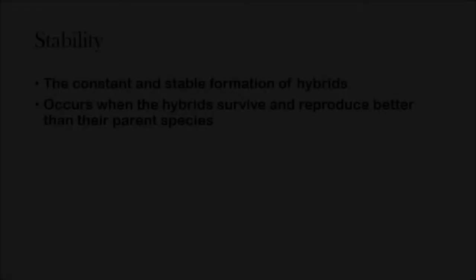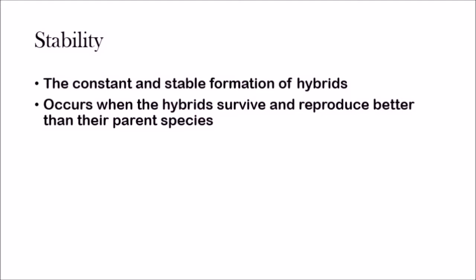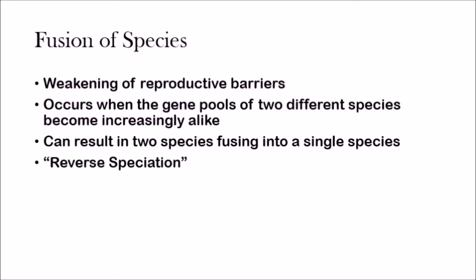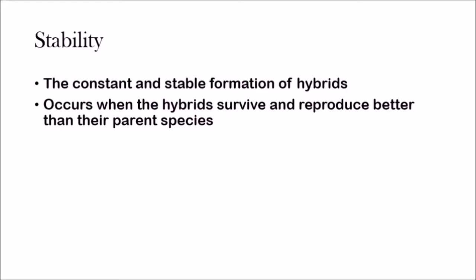The last thing that could possibly happen is stability. Stability is the constant stable formation of hybrids; it occurs when the hybrid survives and reproduces just as well as the parent species. It's a less extreme version of fusion — fusion means the hybrids completely replace the parent species, but stability is when all three species can survive on their own. You'll see this constant hybrid being formed in the middle while the two parent species also survive, and now you have three species.